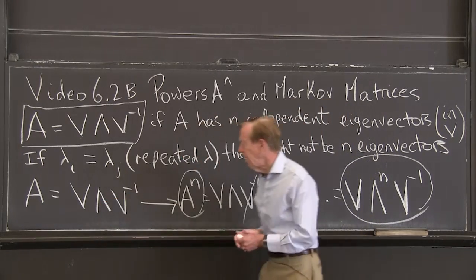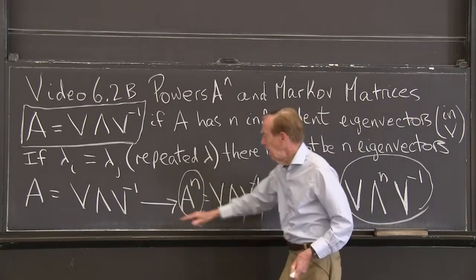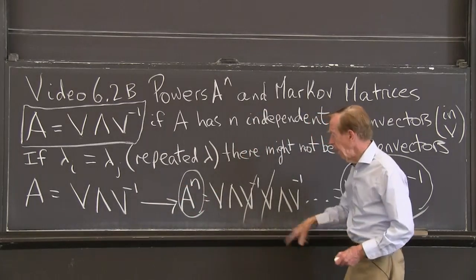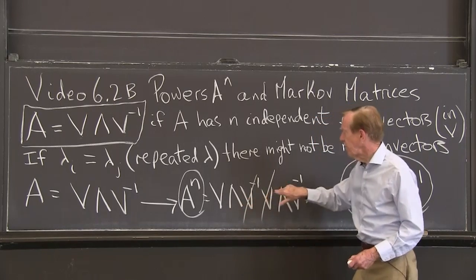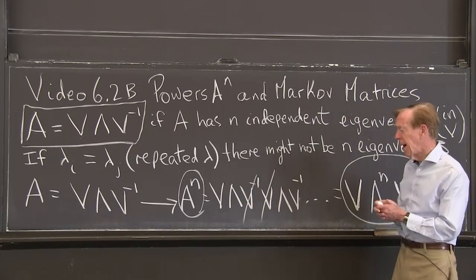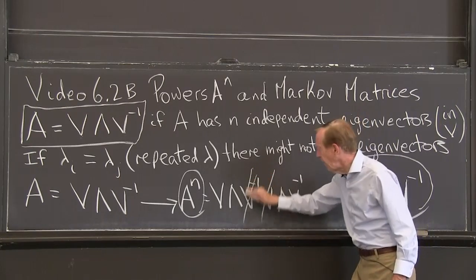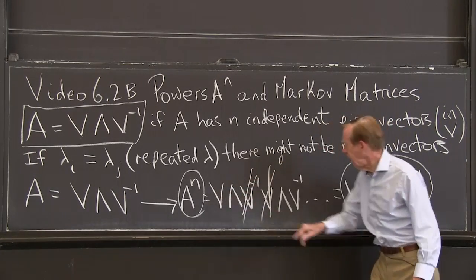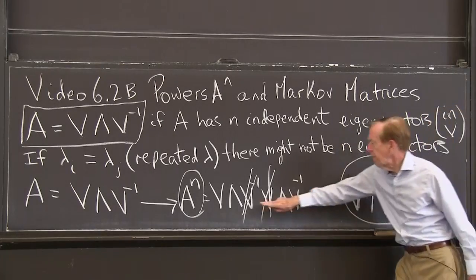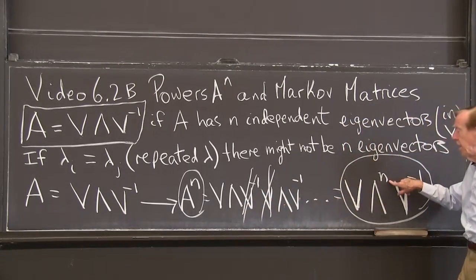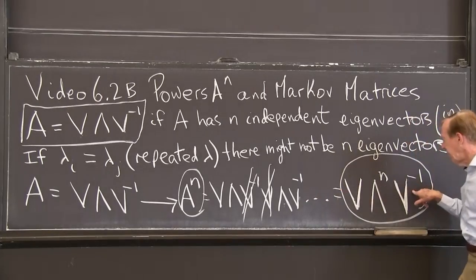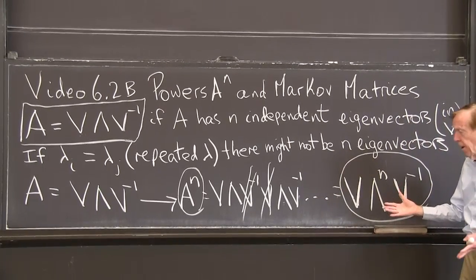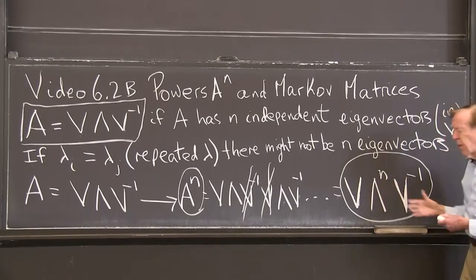But when it works, it really works. The n-th power — just remembering — is V·Λ·V^(-1) multiplied n times. But every time I have a V inverse and a V, that's the identity. So I have V out at the beginning, then lambda multiplied n times, and V inverse at the very end. That's the nice result for the n-th power of a matrix.